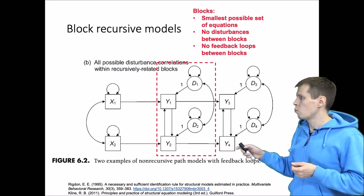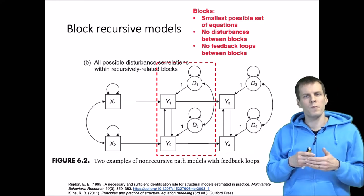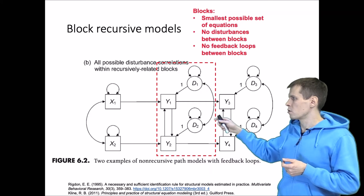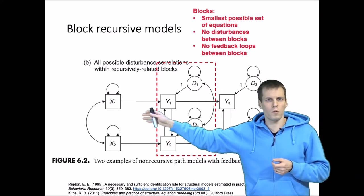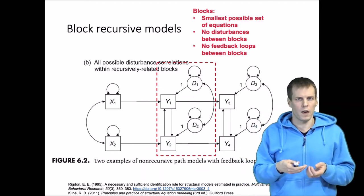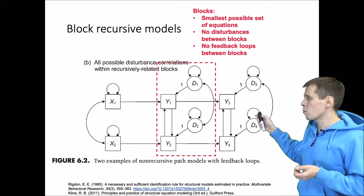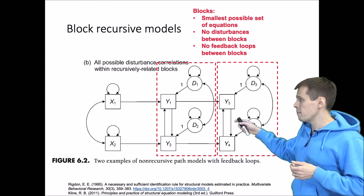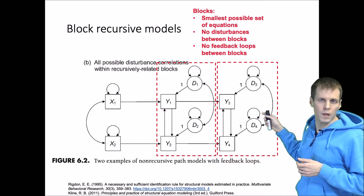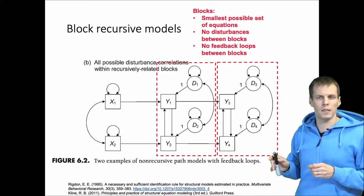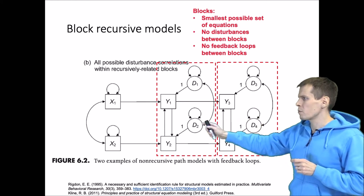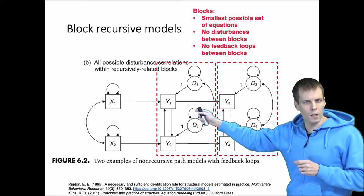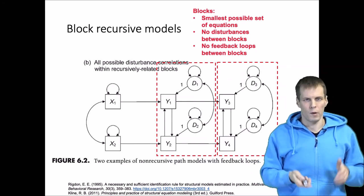So y1 and y2 form one block because there is a feedback loop and a correlation between their disturbances. Exogenous variables don't belong to any block — we only block the endogenous variables. Y3 and y4 form a separate block because they also have a feedback loop and correlated disturbances. We can split this model into two blocks because there are no correlations between the disturbances across blocks and all effects from the first block go to the second block with no effects the other way.